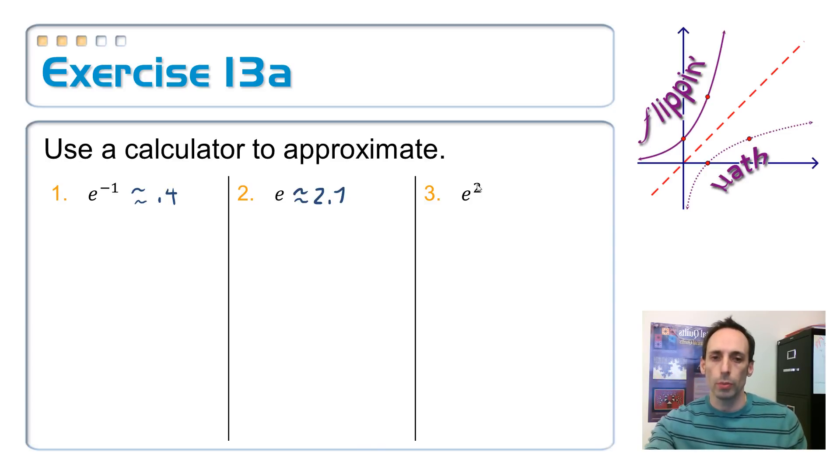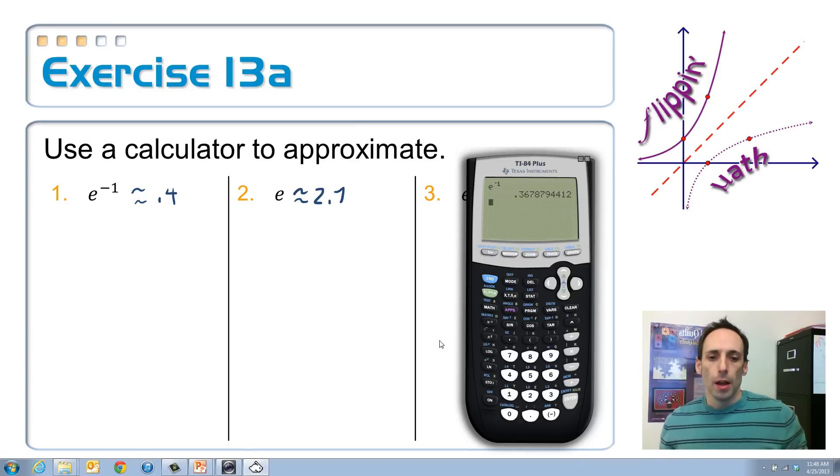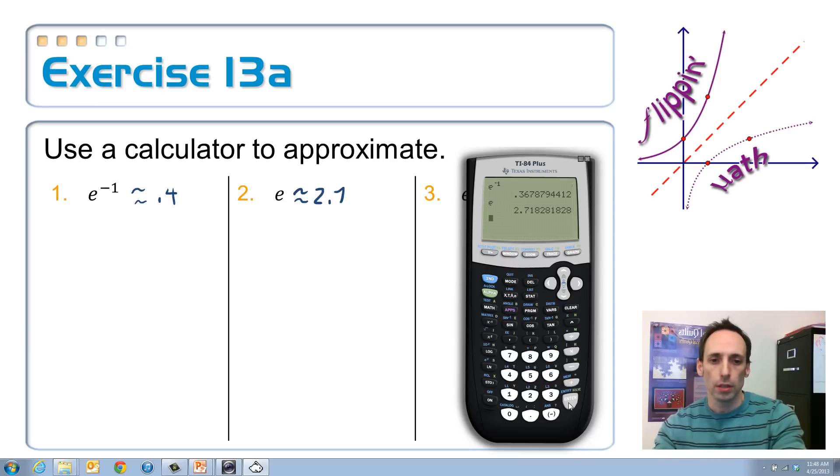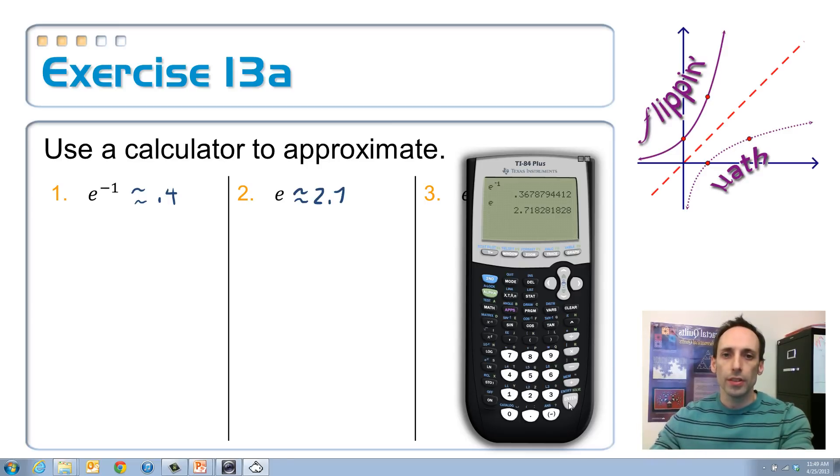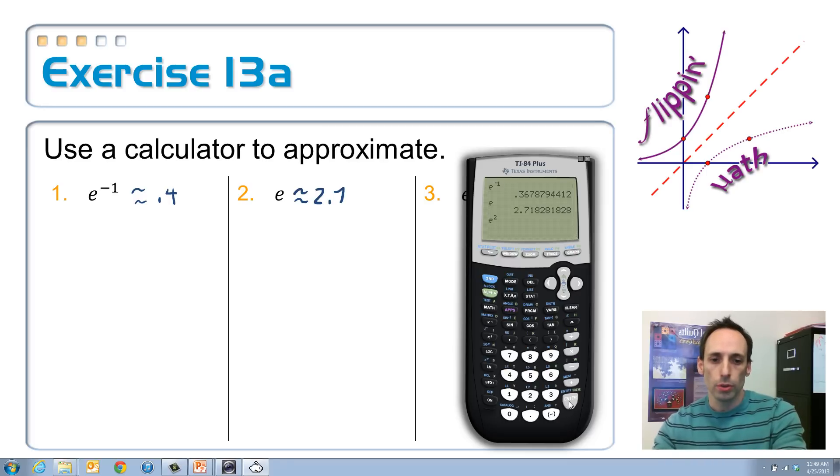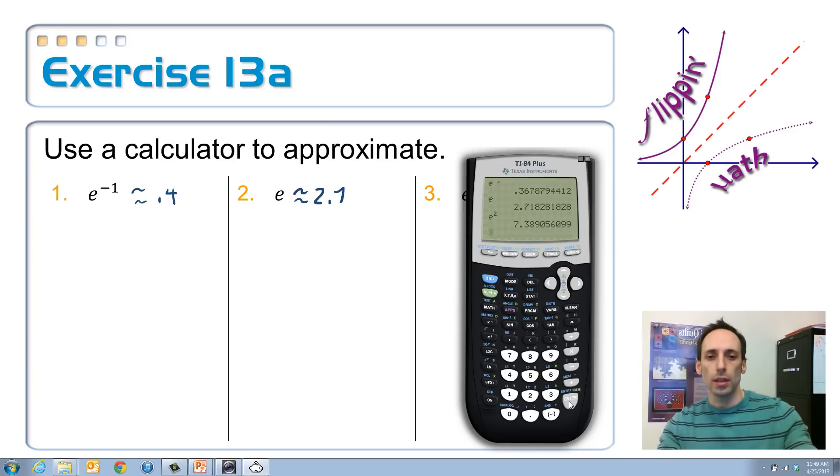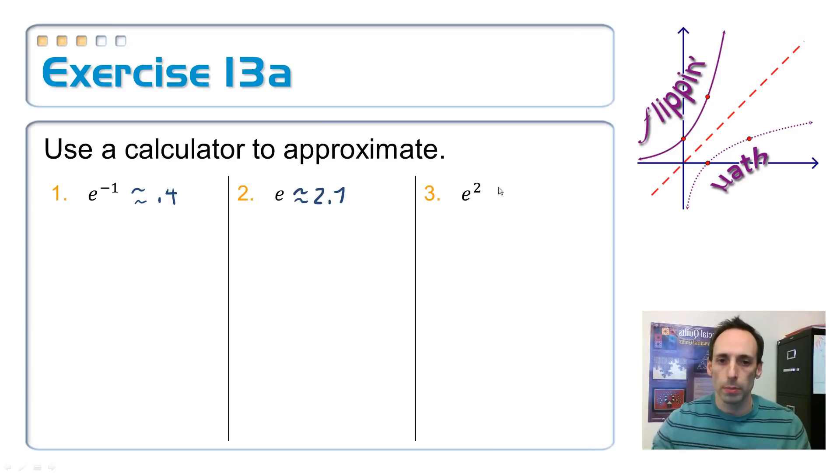And then how about E squared? E is a little bit smaller than 3, so 3 squared would be 9. It's got to be somewhere less than 9. Let's see that on the calculator here. So before I do, the other place where there's an E, I believe, is right above the division sign. That one doesn't have an exponent on it. It just has the E. So let's go with the other one. E to the X and make that a 2. And let's round that to the tens place and say it's about 7.4.